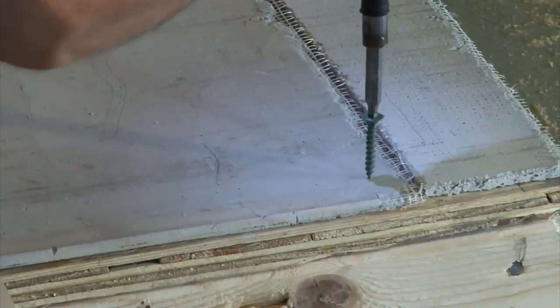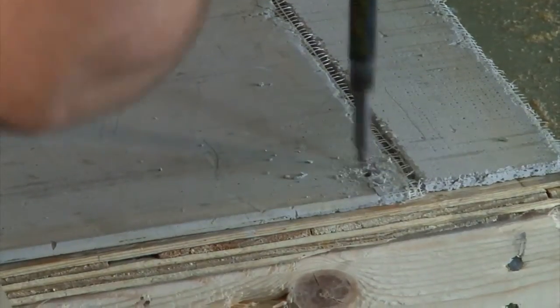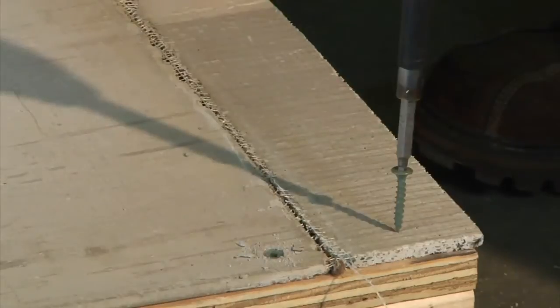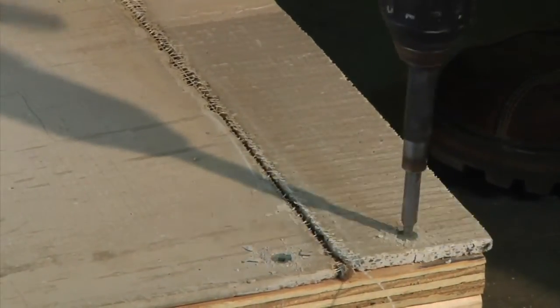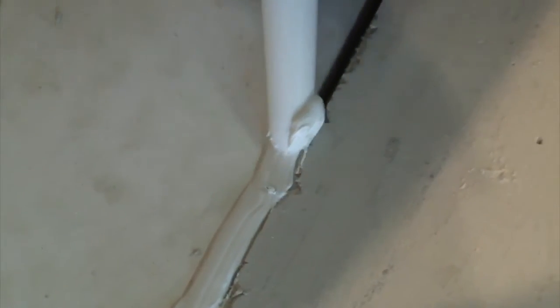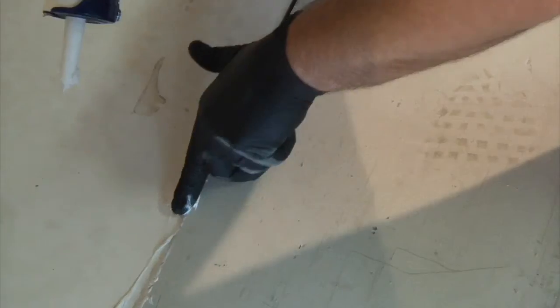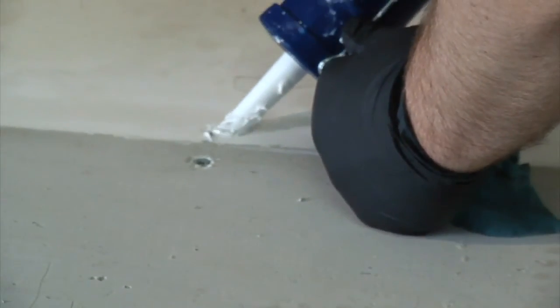For this demonstration, we're using screws to hold the tile backer down. Some people use thin-set or construction adhesive in addition to the screws. Fill in any gaps around the perimeter of the pan over an eighth of an inch with latex caulk. Also, pre-fill the screw heads with the same latex caulk. Fill them in and level them out.